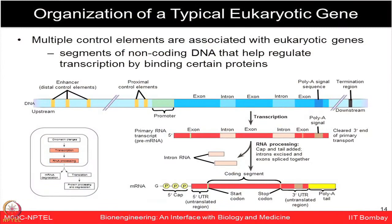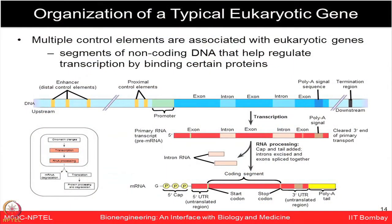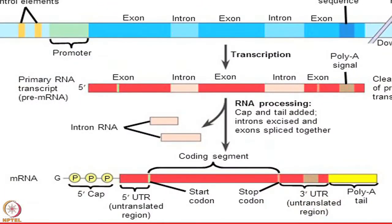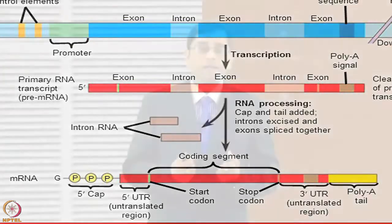The organization of a typical eukaryotic gene is really complex, involving many processes to go from DNA to RNA. We have various exon regions and intron regions. In the process of alternative splicing, introns are removed and the coding exons come together to give rise to the functional RNA molecule. There are multiple control elements associated with eukaryotic genes — segments of non-coding DNA that help regulate transcription by binding to certain proteins.